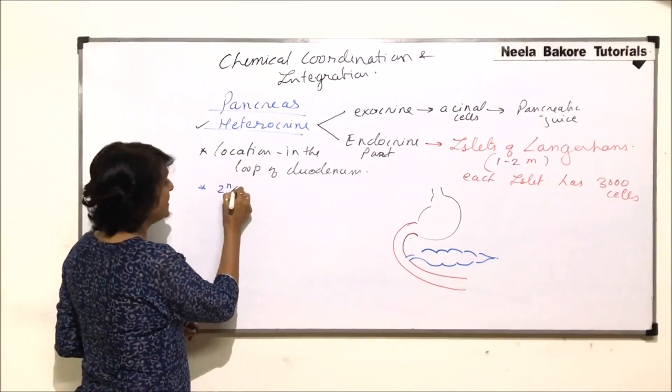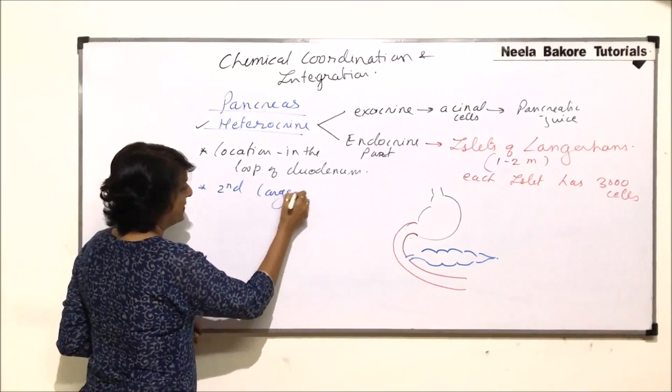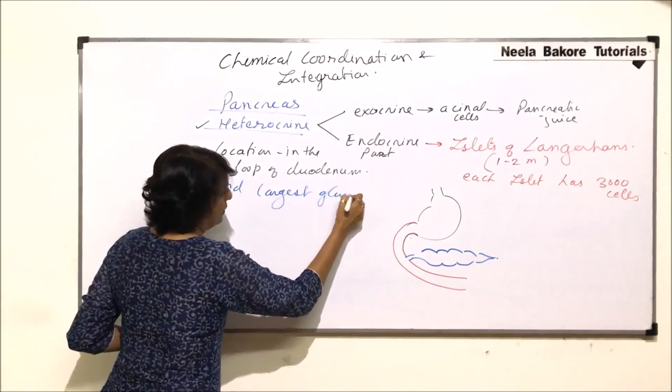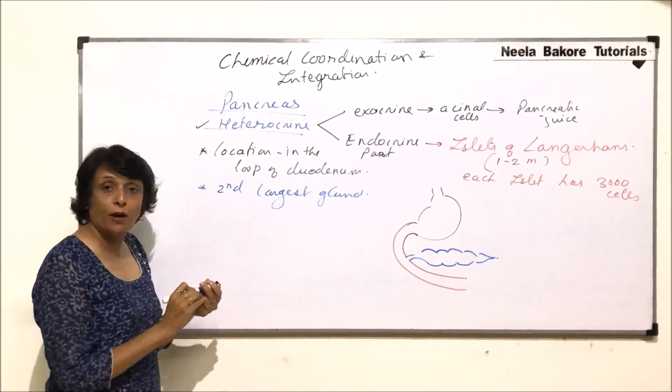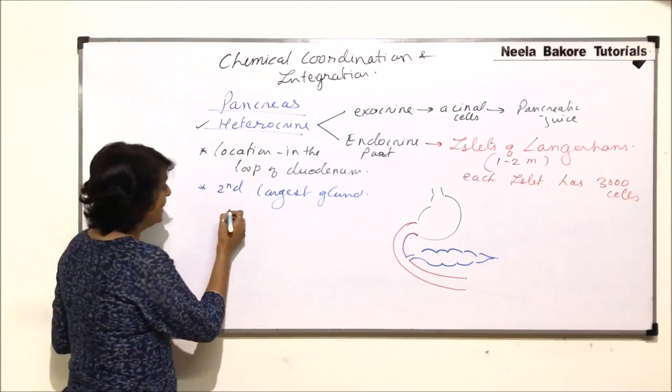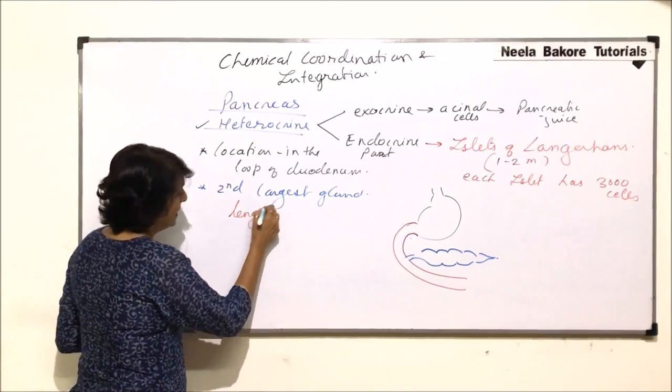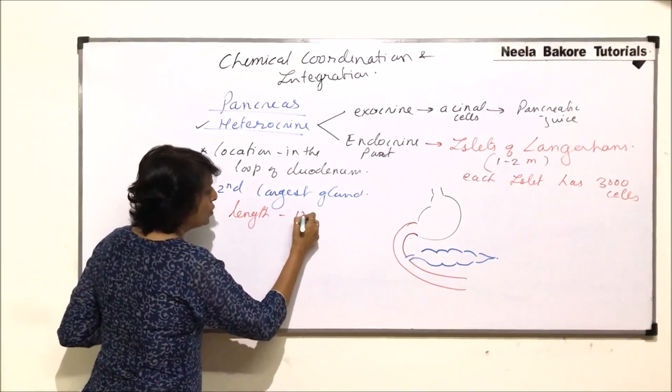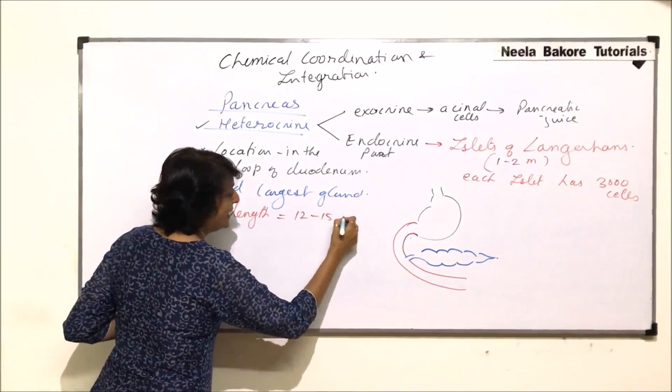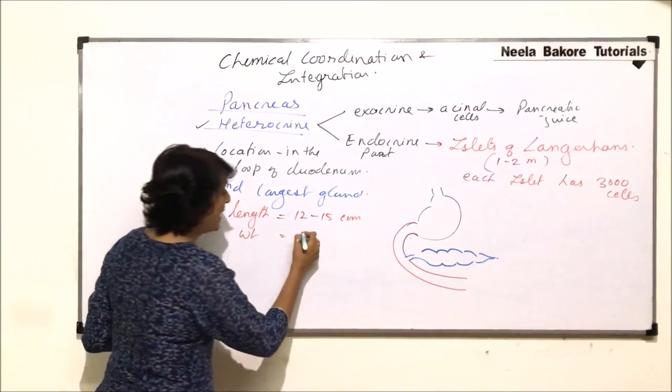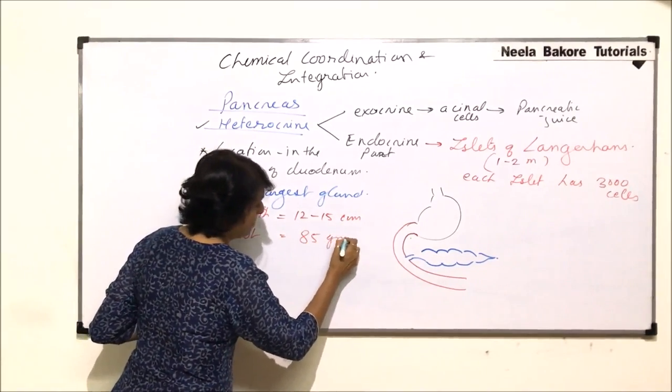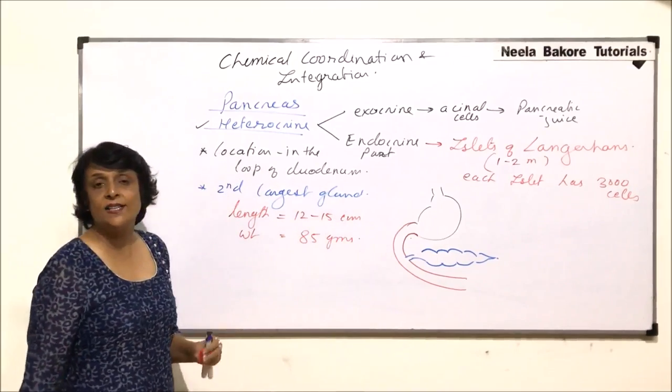Pancreas is the second largest gland, the first one is liver. This is the second largest gland of our body. Its length is about 12 to 15 centimeters and it weighs about 85 grams, so it is a large gland.